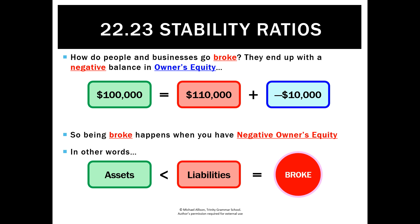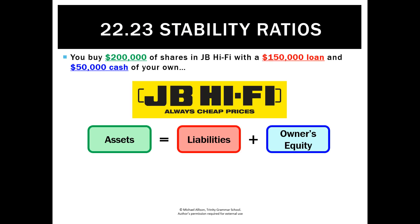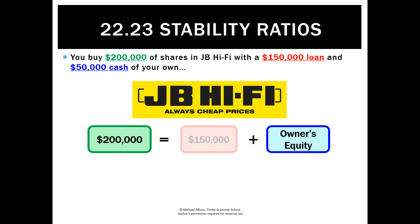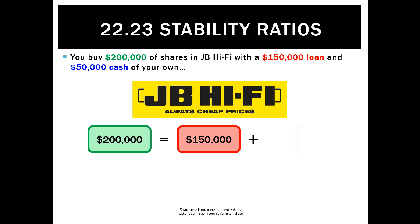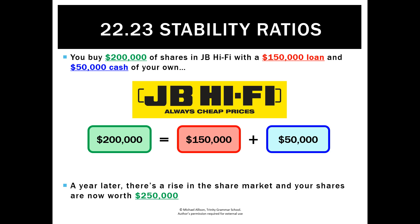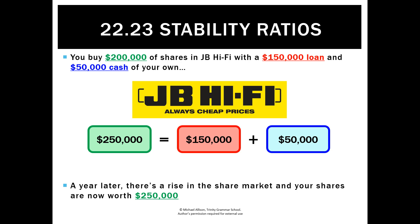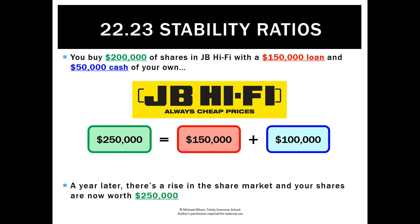Fundamentally, that is when you go broke — when your assets are less than your liabilities, you are mathematically broke. To take an example of how we can prevent that happening: we buy assets, in this case two hundred thousand dollars of JB Hi-Fi shares, funded with a hundred and fifty thousand dollar loan and fifty thousand dollars of our own cash. So the asset is two hundred thousand, the liability is a hundred and fifty thousand, and owner's equity is fifty thousand. Ideally the value goes up — if those shares went up to two hundred and fifty thousand, the bank still only wants their one hundred and fifty thousand back, and our equity has gone up to a hundred thousand.